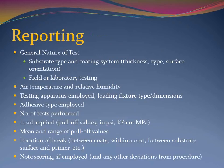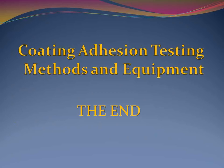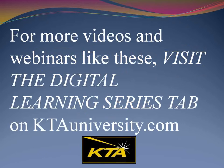Recording of the data acquired during pull-off adhesion testing includes the substrate type, the coating or coating system and thickness, the type and test surface orientation, whether the testing was performed in the field or in a laboratory, the air temperature and relative humidity during testing, the test apparatus along with the loading fixture type and size, the type of adhesive used, the number of tests performed, the load that was applied, the average and range of pull-off values, the location of break, and finally, a note as to whether scoring was employed or whether there were any other deviations from the standard test method. Thank you for listening to this webinar on coating adhesion testing methods and equipment. To enjoy viewing other videos and webinars like this one, visit the digital learning series tab on ktauniversity.com.